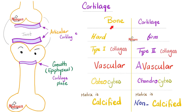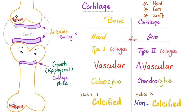Now to today's topic — the comparison between bone and cartilage. Bones are hard; cartilages are firm. We have three crude degrees of hardness in medicine: hard, firm, and soft. Hard is like the bone in your forehead. Firm is like the tip of your nose — it's cartilage, so it's firm, not as hard as bone but not as soft as skin. Bones contain type 1 collagen in their matrix; cartilages contain type 2 collagen in their matrix.